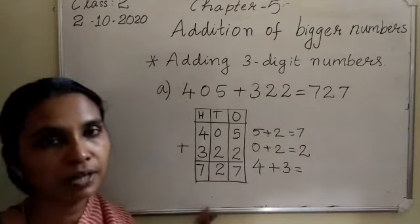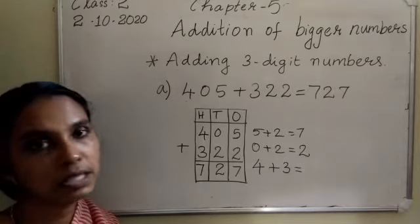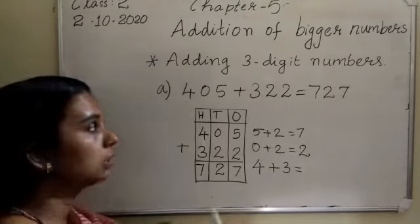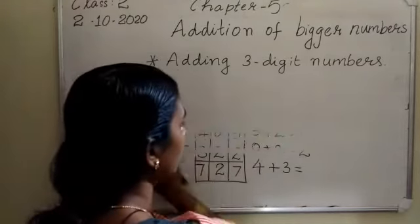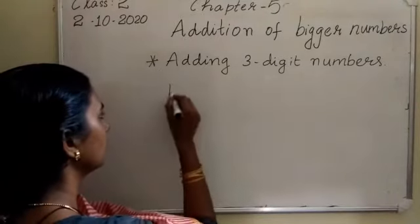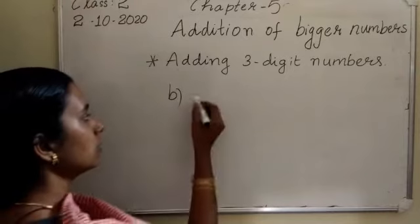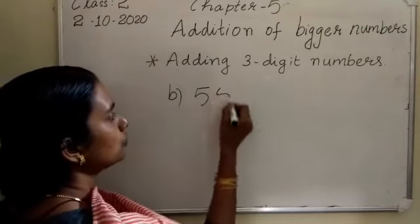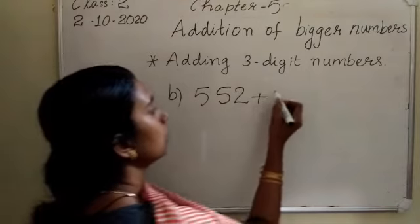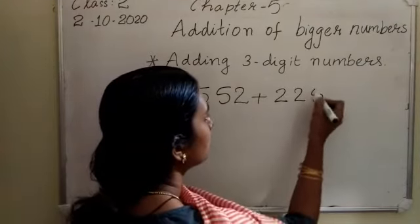I hope you have understood how to add 3-digit numbers. Then do one more question. The next question is 552 plus 225.